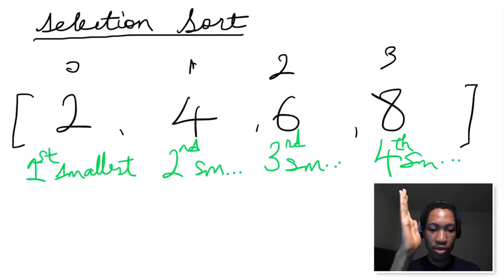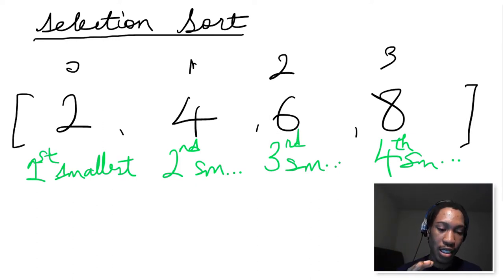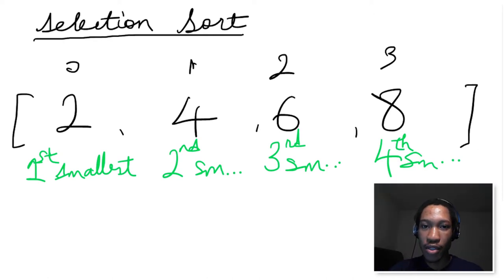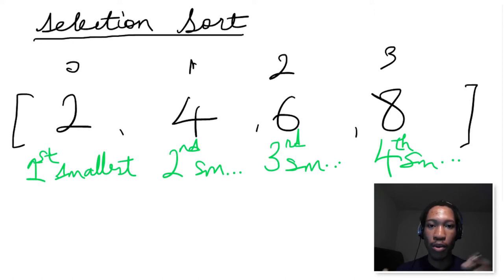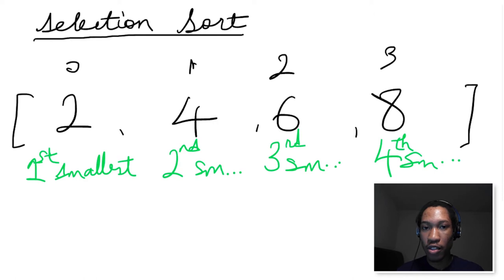So that's exactly what we're going to be doing with selection sort. We're going to have a pointer that points to a certain index, and then we're going to be looking for the smallest number that corresponds to that index, and then swapping those two numbers. I have a simple mnemonic to remember selection sort — three S's: select, smallest, swap. We're going to be selecting the smallest element and then swapping it with another element. It really clicks for me and I hope it does for you too.